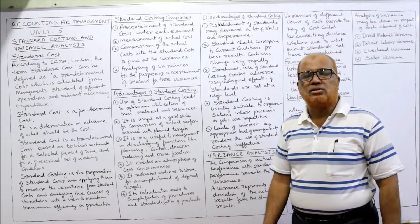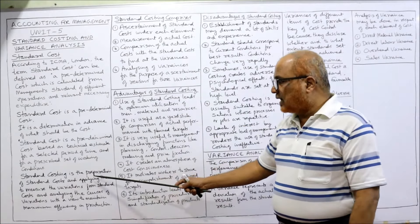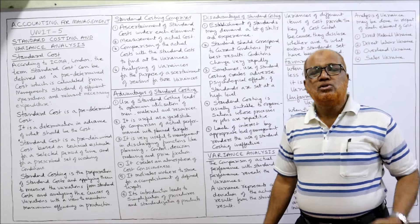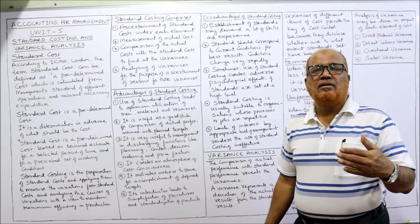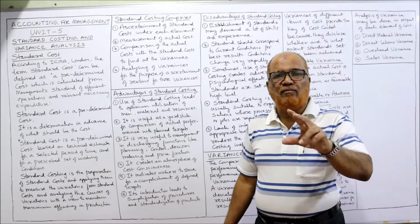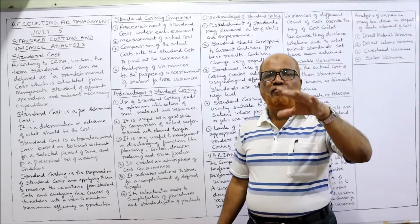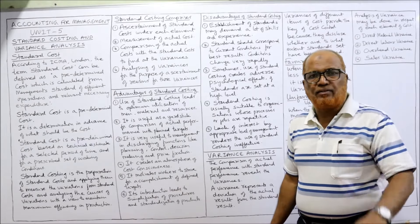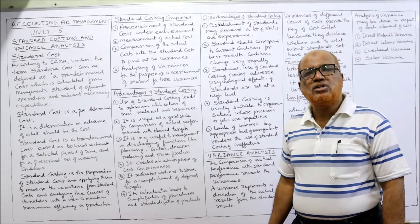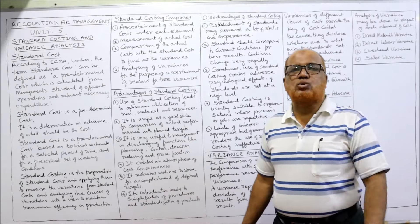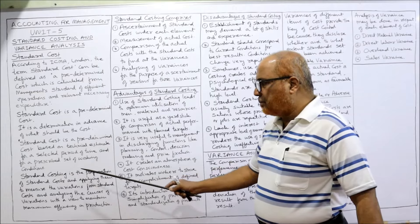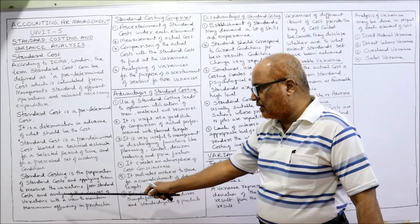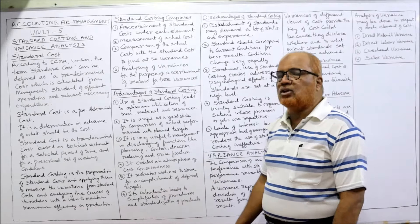Now, what do we mean by standard costing? Standard costing is the preparation of standard costs and applying them to measure the variations. Whatever we estimate, we will not always actually achieve it — there will always be a variation between what we have planned and what we are actually incurring. That difference is called variation. Standard costing is the preparation of standard costs, applying them to measure the variations from standard cost, and analyzing the causes of those variations.